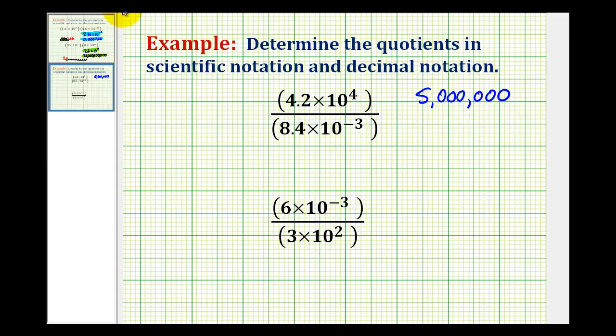But now we also want to write this in scientific notation. Remember in scientific notation this number here has to be greater than or equal to 1 and less than 10. So if we write 5 million without the commas it will be helpful. The decimal is right here but for scientific notation it would have to be here. So we're going to have 5 times 10 raised to some power.